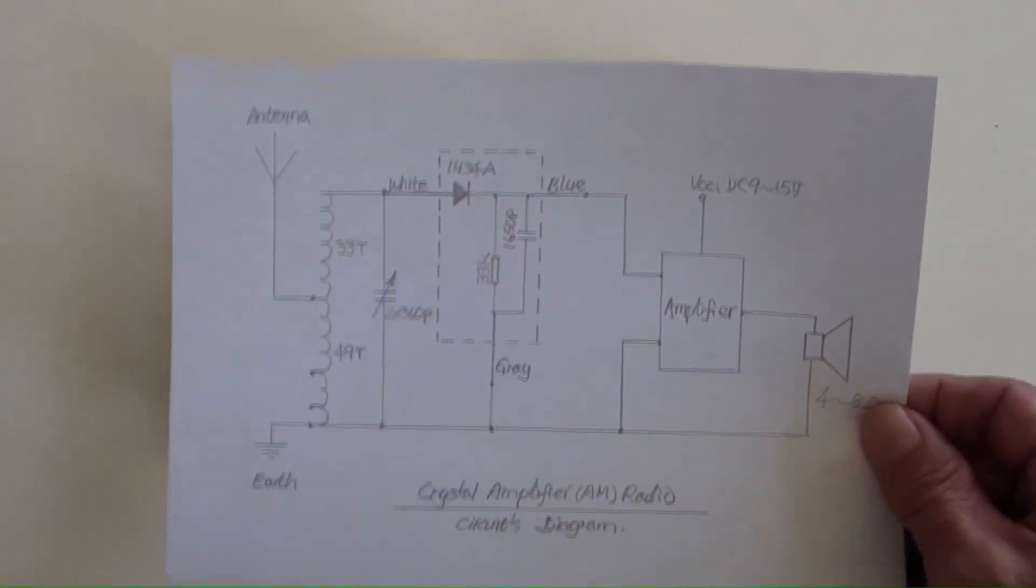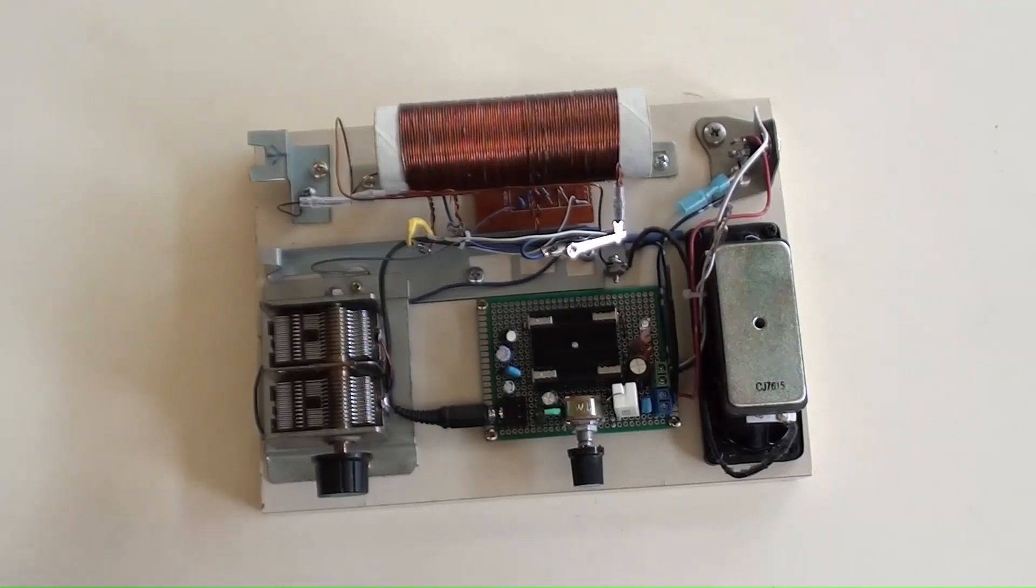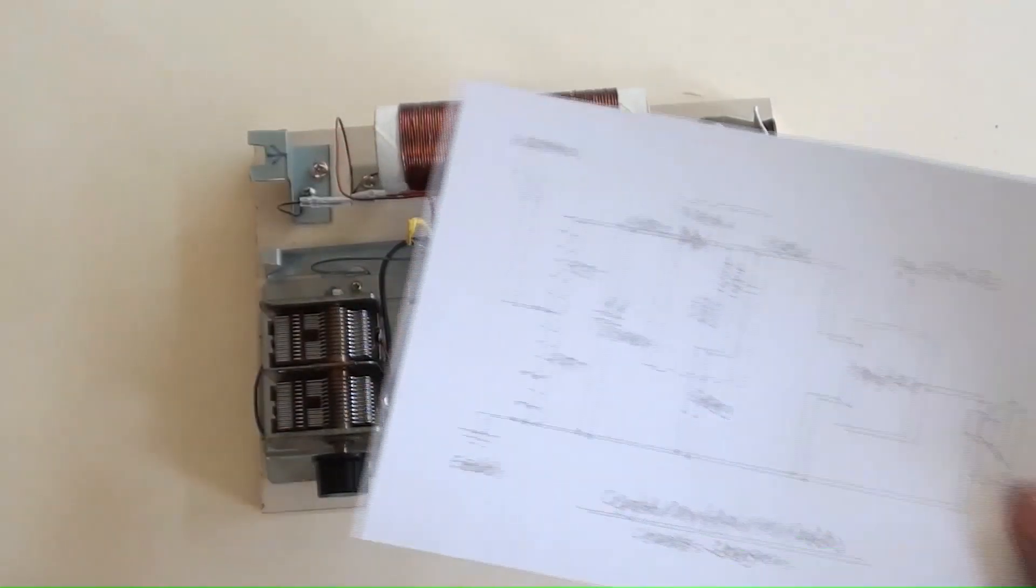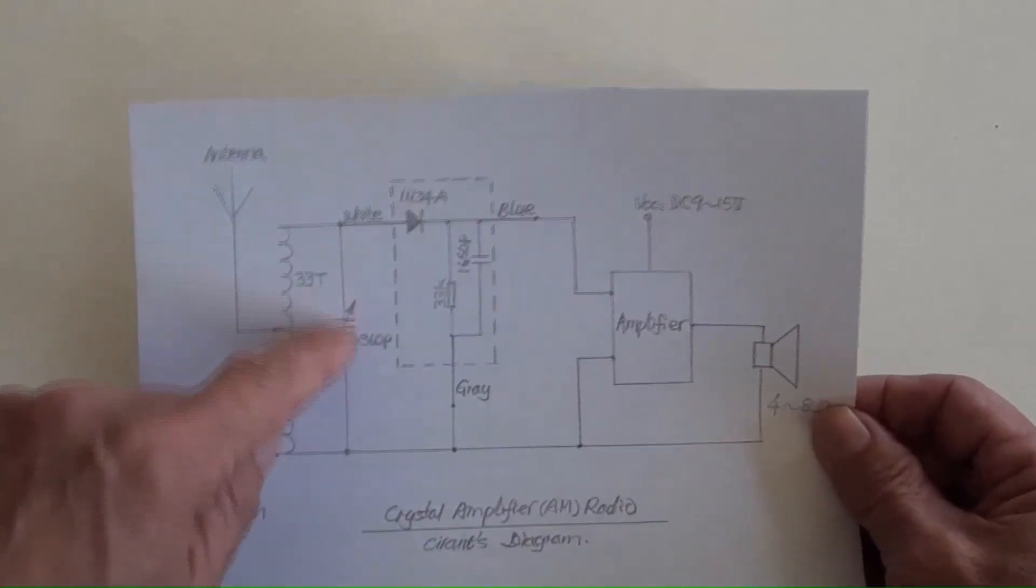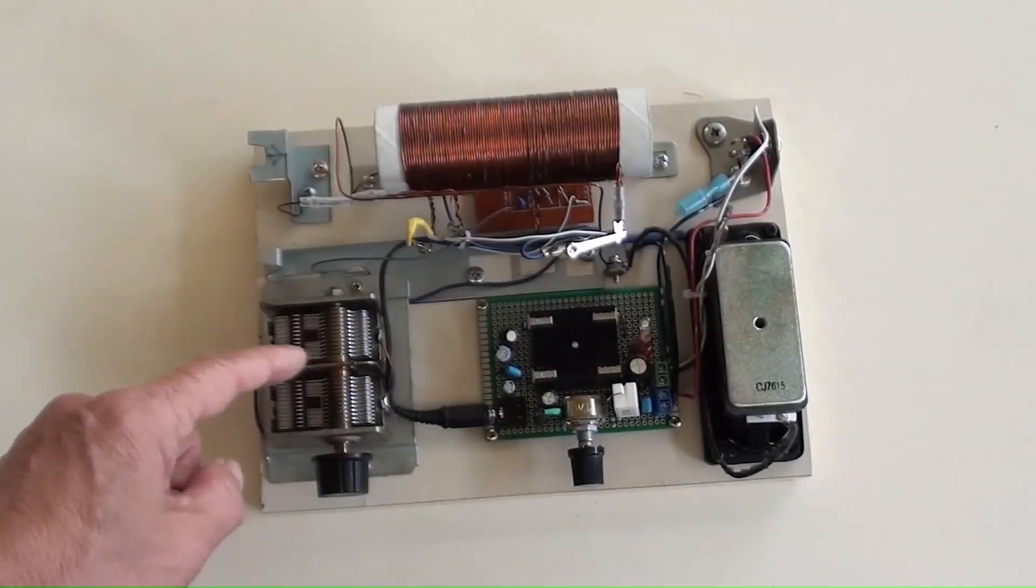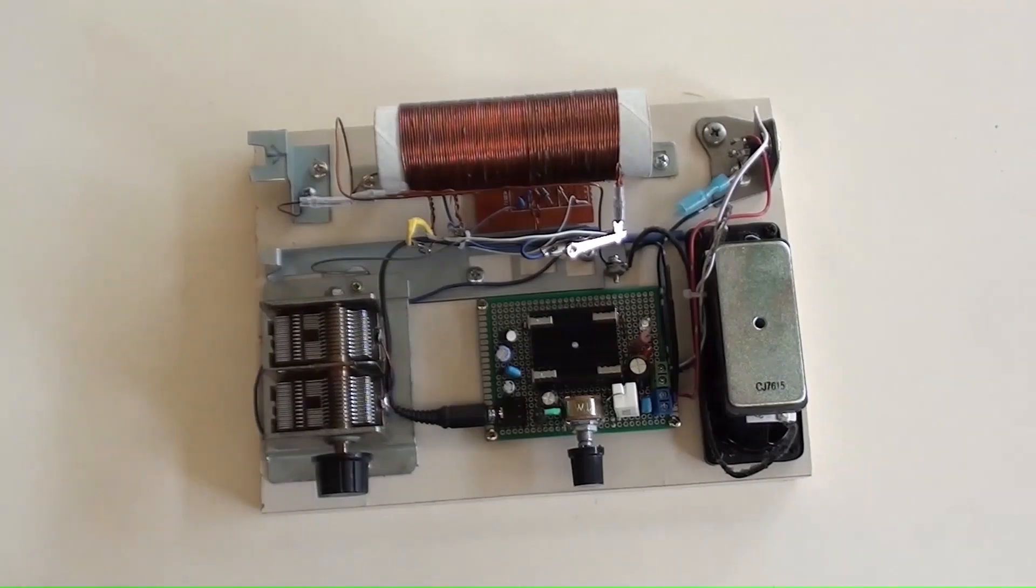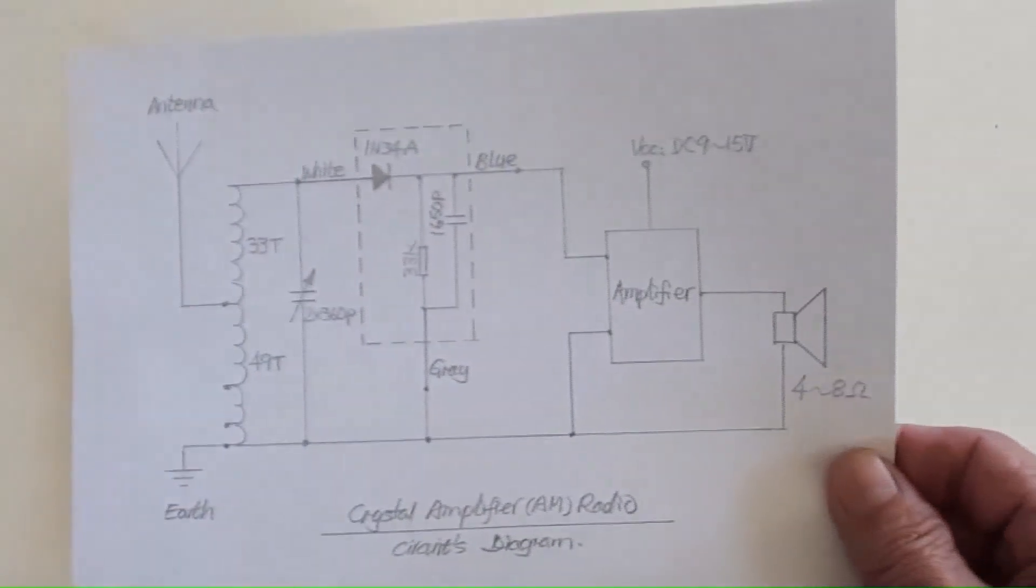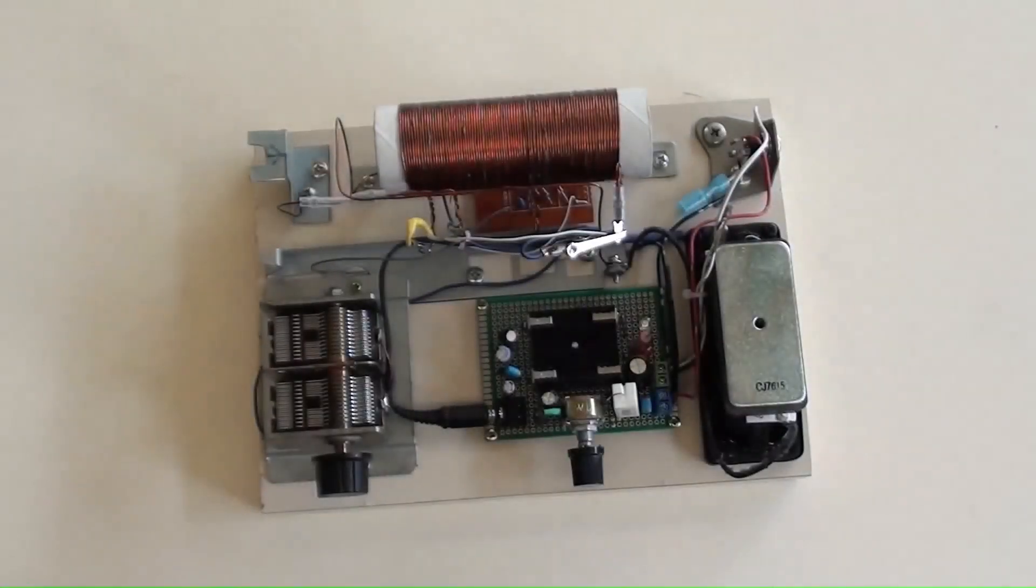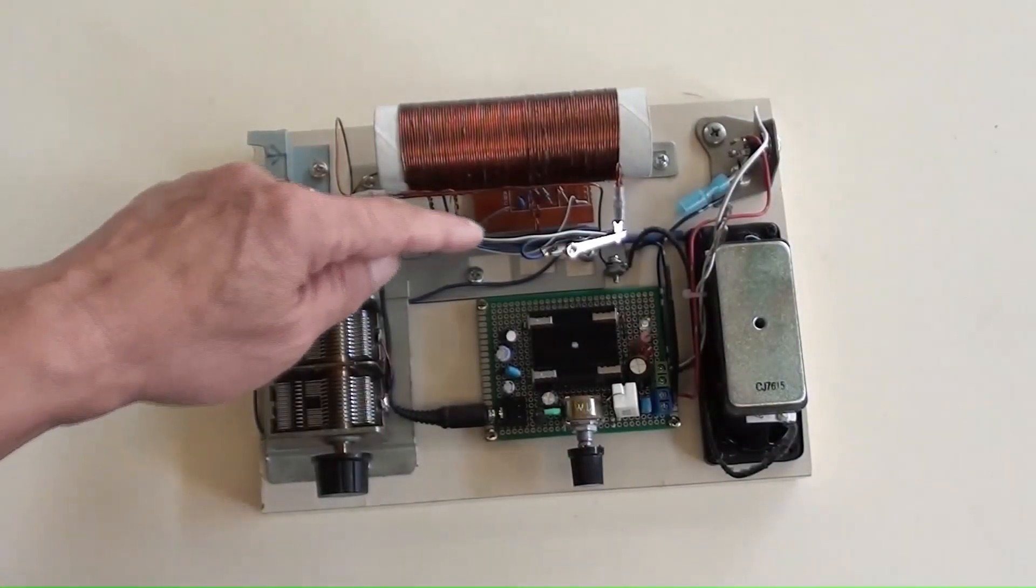The diode pack is secured underneath the coil, just over there. An adjustable capacitor from the diagram is secured here. The white wire from the diode pack is connected to the coil's rightmost terminal.